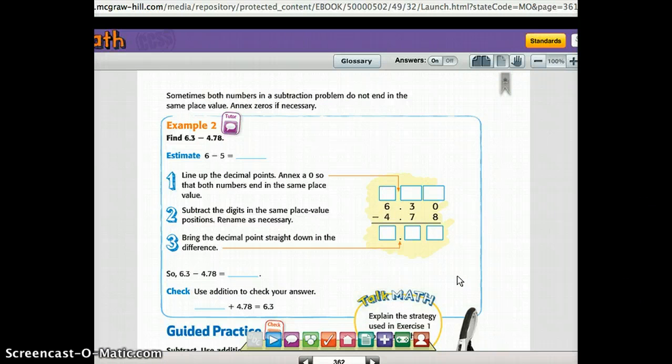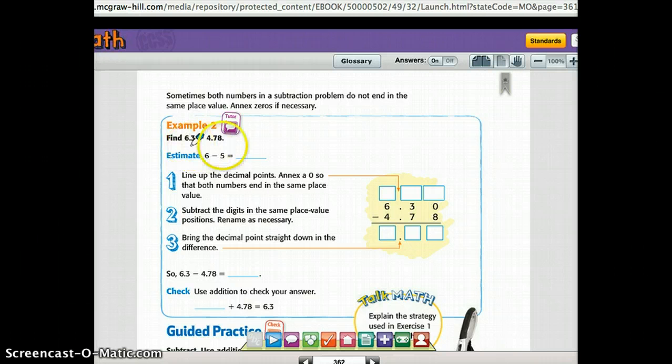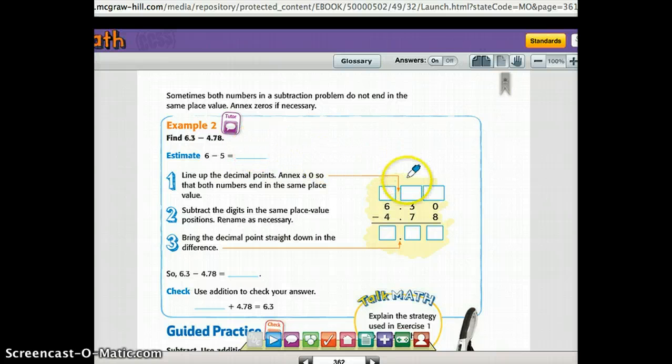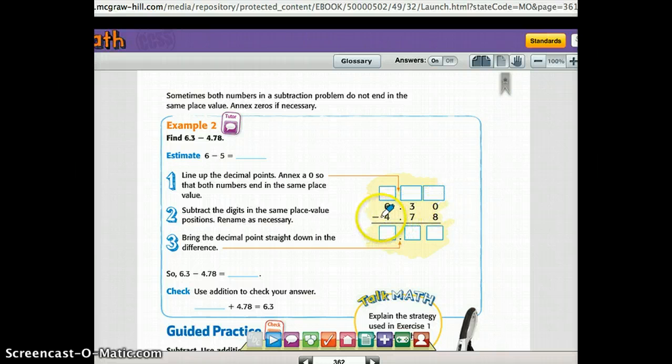Here's another good example on page 362. So in this case, it's 6 and 3 tenths. And they are subtracting 4 and 78 hundredths. So this is where they have some different digits. So we have to line those up. So we start with the 6 and 3 tenths. And they went ahead and annexed a 0 at the end so that they have the same place value. And then below that, we do minus 4 and 78 hundredths. Line up those decimals. Don't forget that.